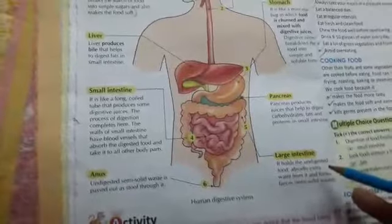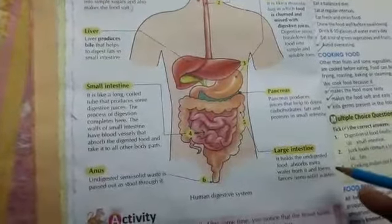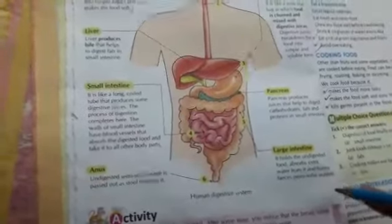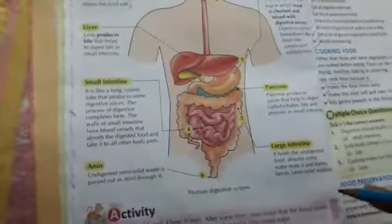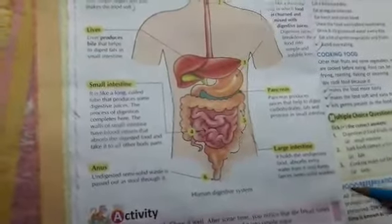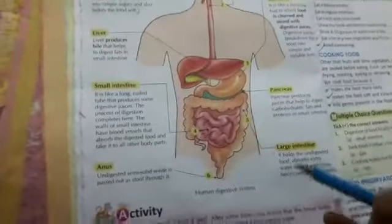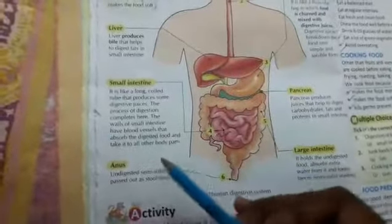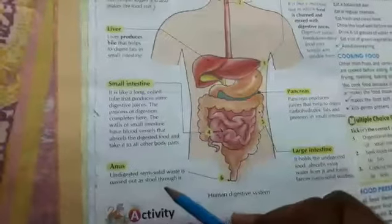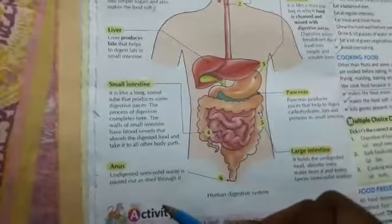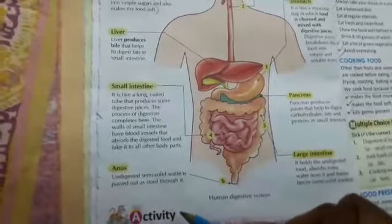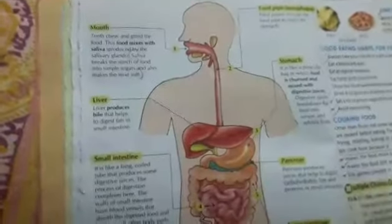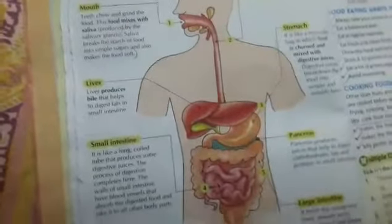After the small intestine, food goes to the large intestine. The large intestine holds the undigested food, absorbs extra water from it, and forms feces — the semi-solid waste. At last, it goes to the anus, where the undigested semi-solid waste is passed out as stool.